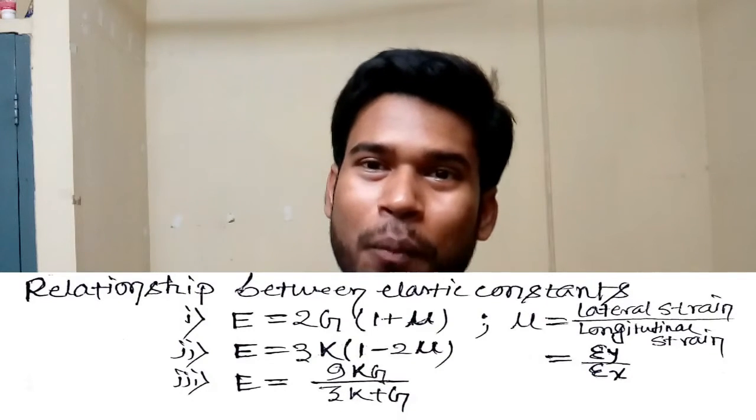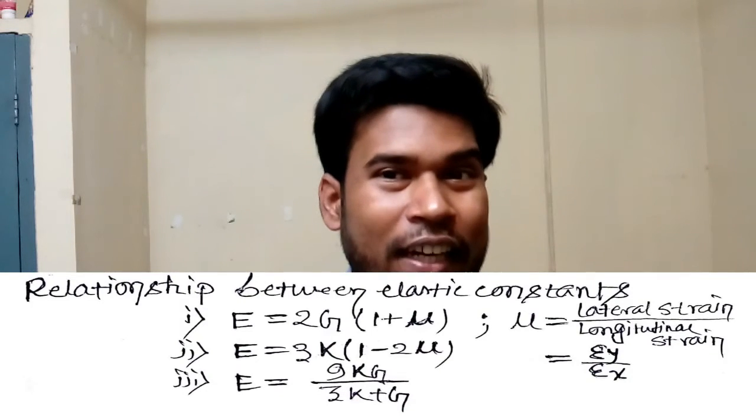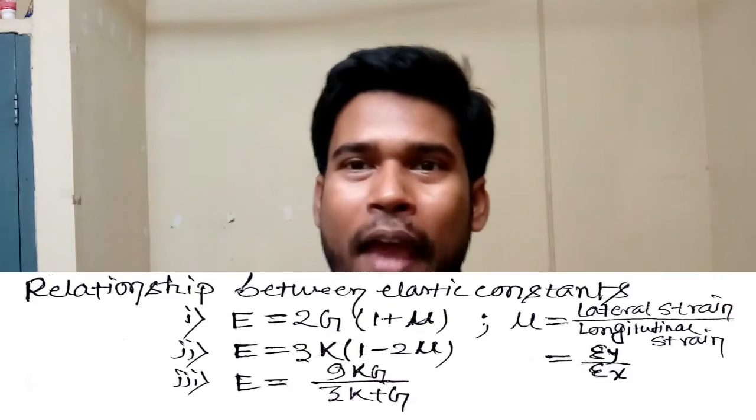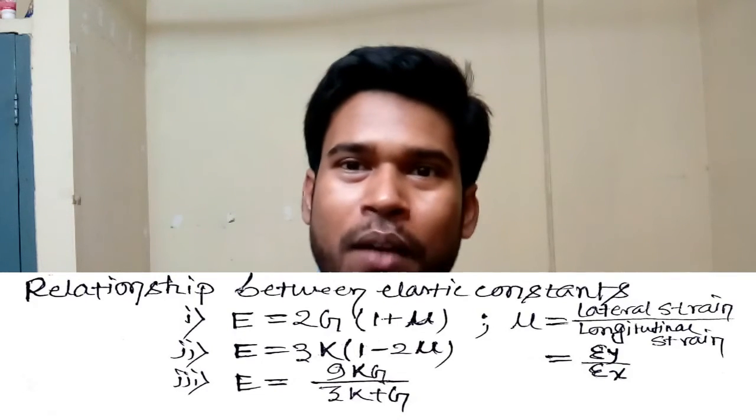The relation between E and G is: E = 2G(1 + μ). The relation between E and K is: E = 3K(1 − 2μ). These are the key inter-relationships between the elastic constants.